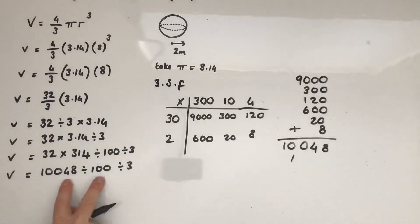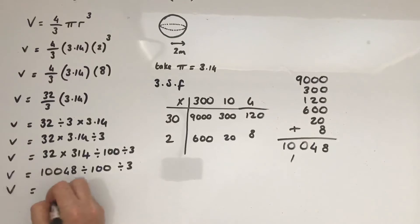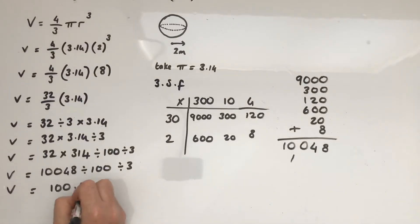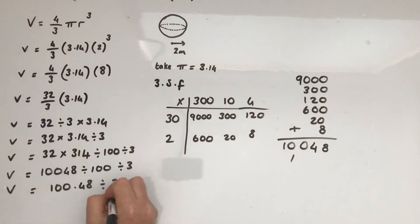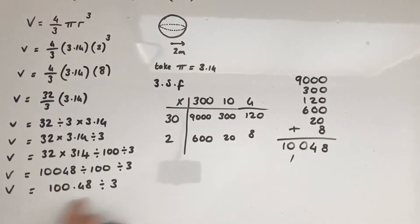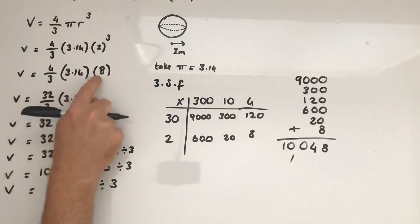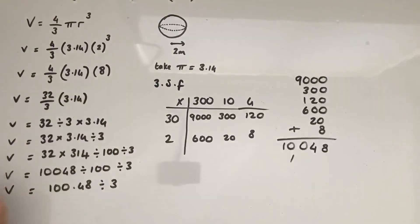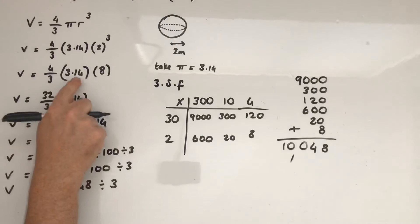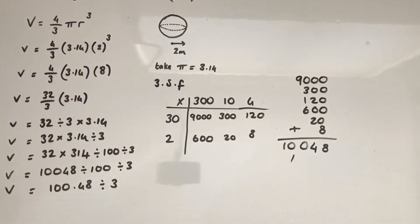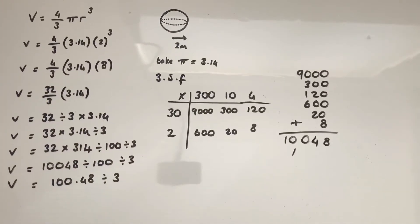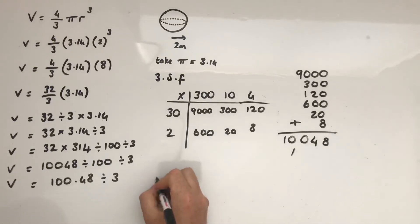We're now at the point where we all need to divide a decimal by 3. Instead of earlier on dividing 8 by 3 then multiplying by 4, we're leaving the division by 3 till the end. In the previous videos, you'll see me dealing with that at the start.